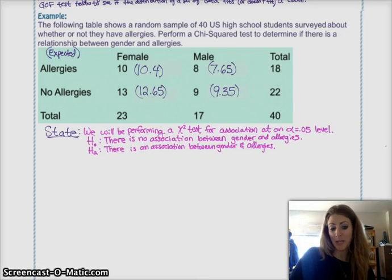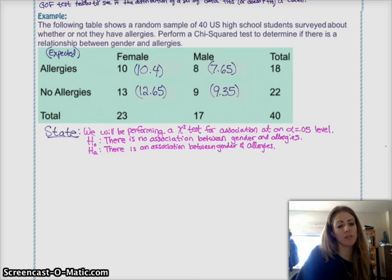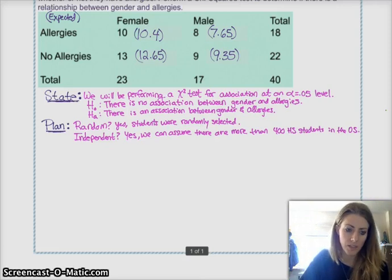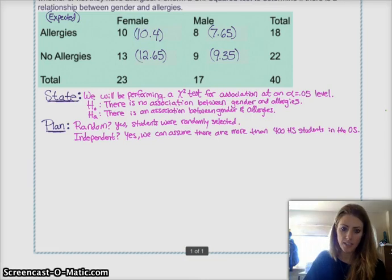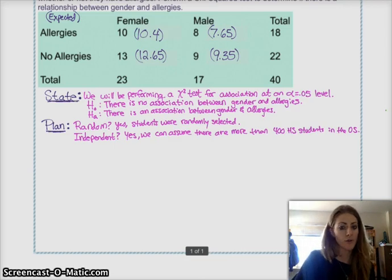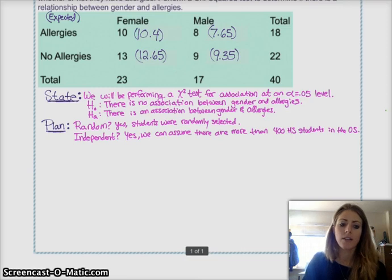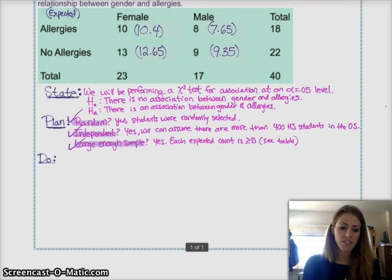Moving on to planning. Let's check our conditions. Random and independent, same as they've always been. Random? Yes. Students were randomly selected. Independent? Yes. We can assume, because this was sampling without replacement, we can assume there are more than 400 high school students in the United States. And next is the large enough sample, which we need the expected counts for, which we already have. So, we can just state something like, see expected counts in the table. Each expected count is greater than five, so we have successfully checked that condition. All right, so we've checked our conditions, those work, so now we just need to calculate stuff.